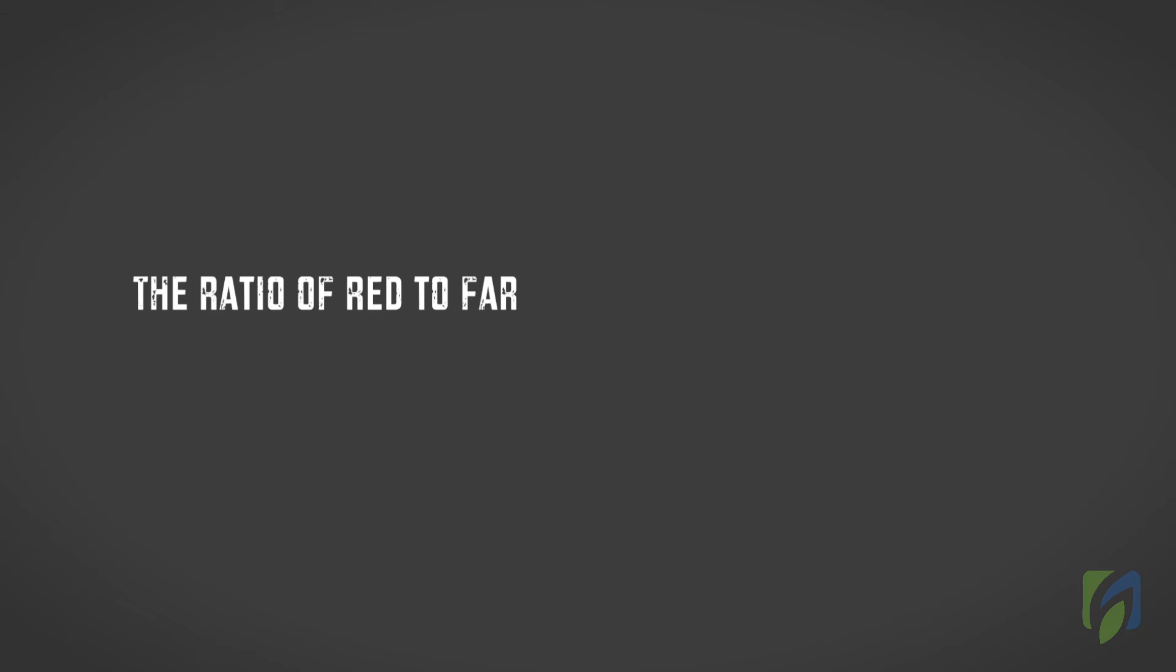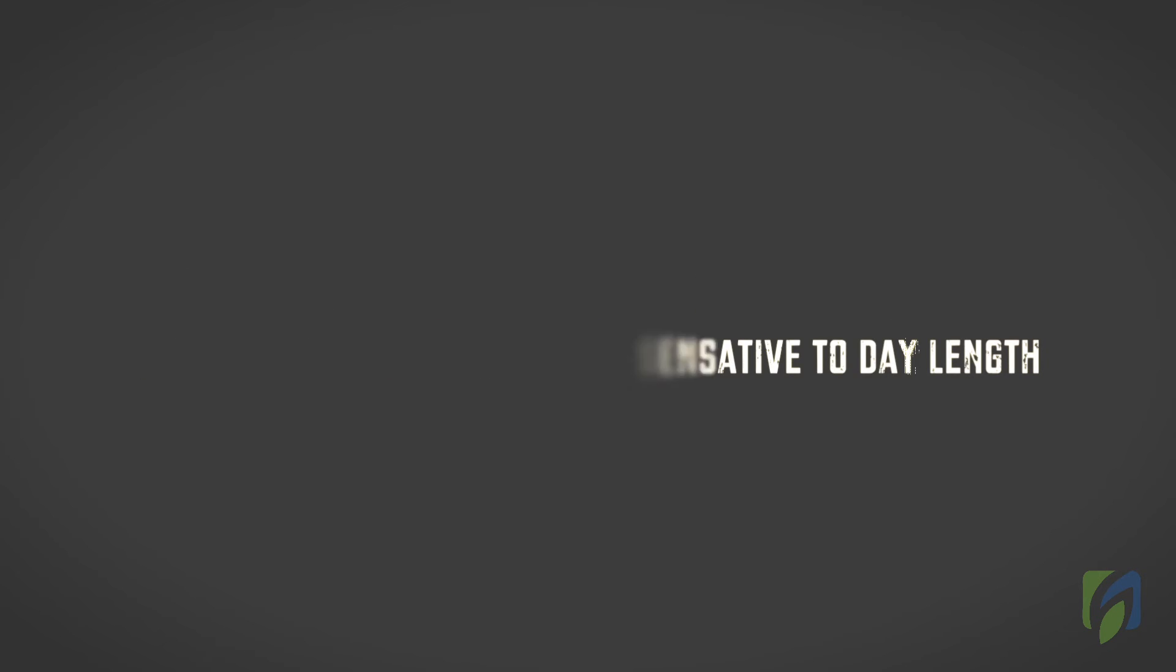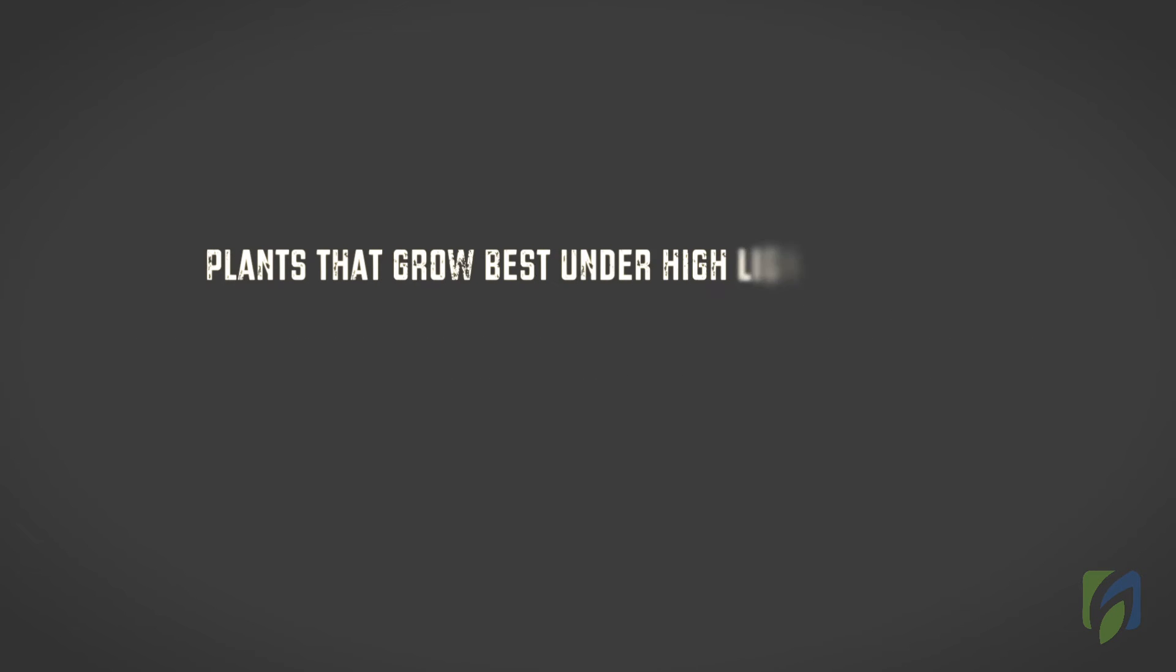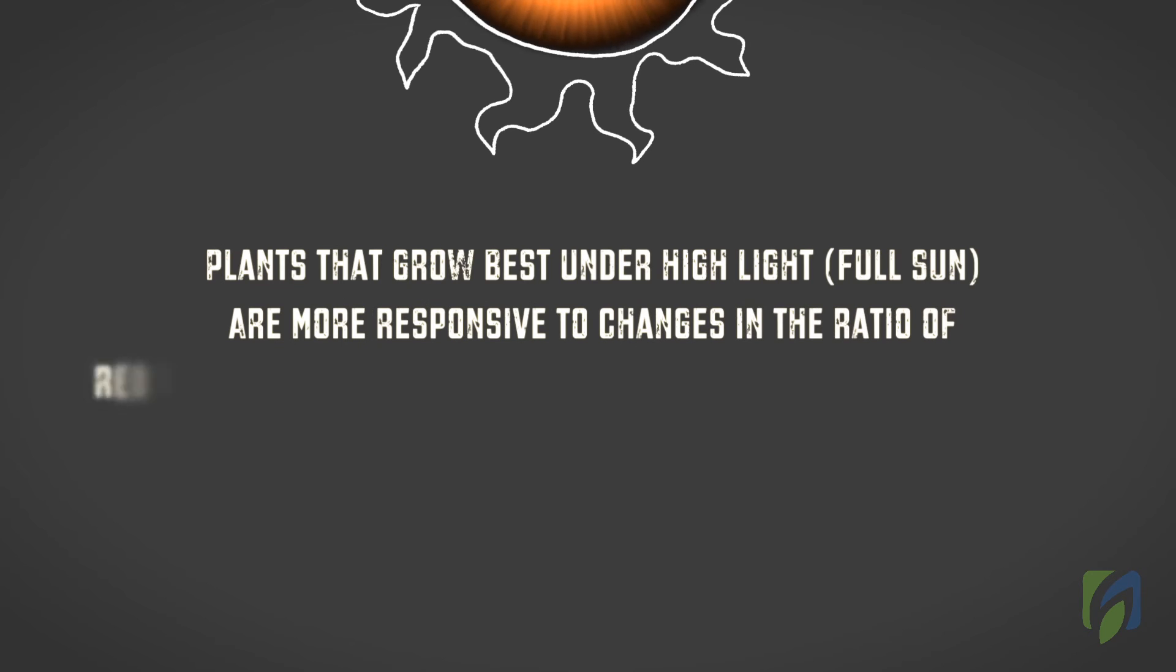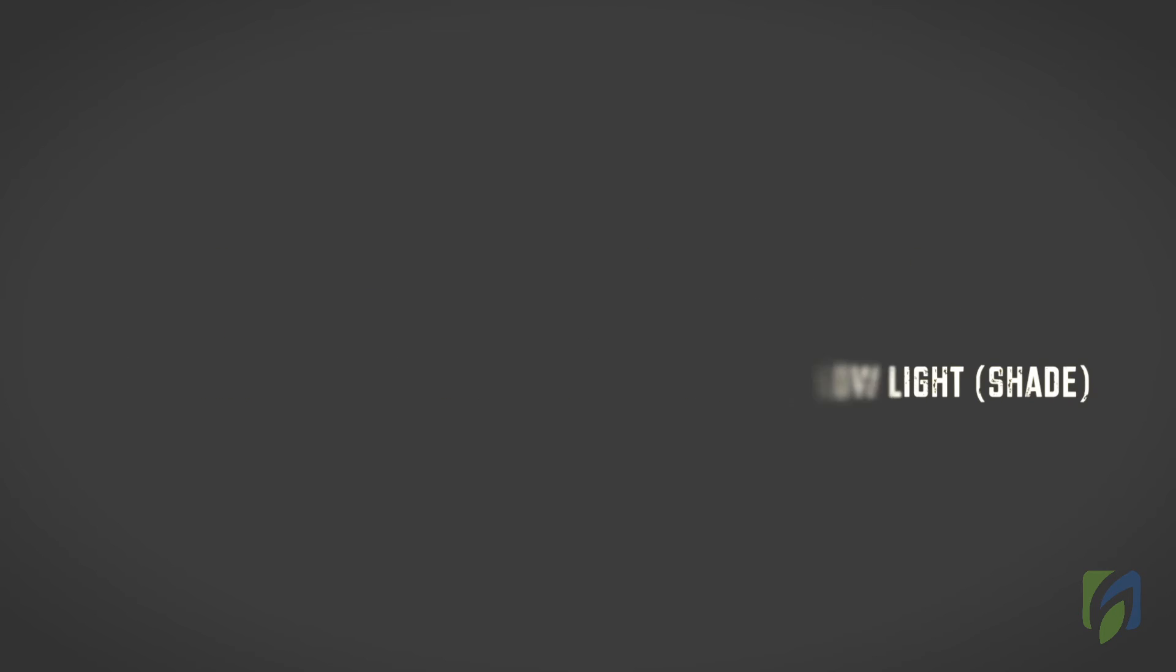The ratio of red to far red light also controls flowering in plants that are sensitive to day length. Plants that grow best under high light, or full sun, are more responsive to changes in the ratio of red to far red light than plants that tolerate low light being in the shade.